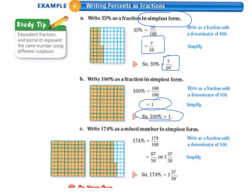Letter C: write 174% as a mixed number in simplest form. We know that it's going to be greater than 1. So 174% is an improper fraction — it's 174 over 100. When we reduce that, it equals 87 fiftieths. And then to write it as a mixed number, it equals 1 and 37 fiftieths. So 174% is equal to 1 and 37 fiftieths.